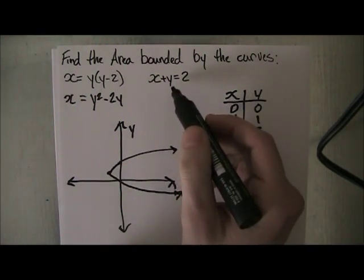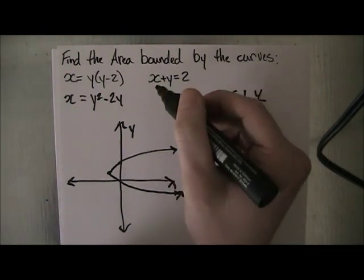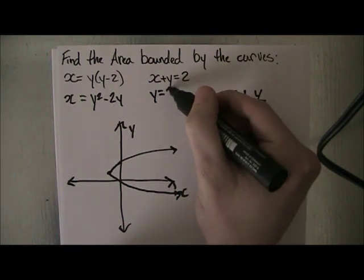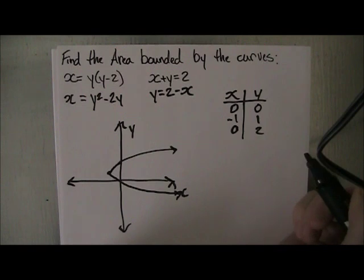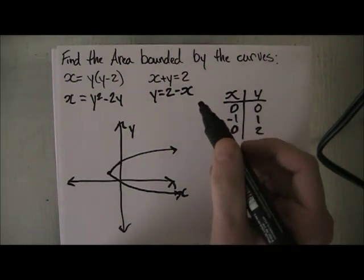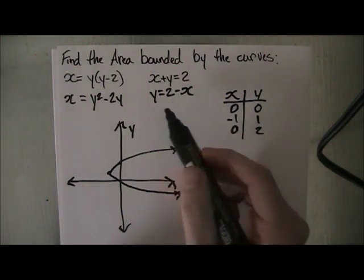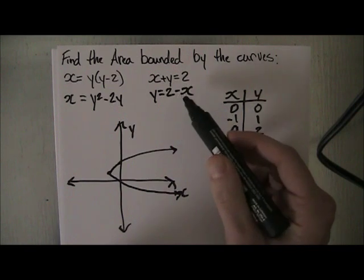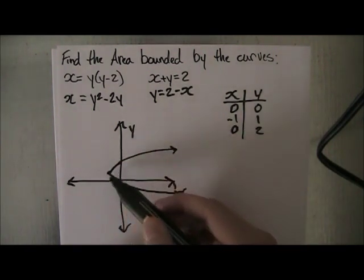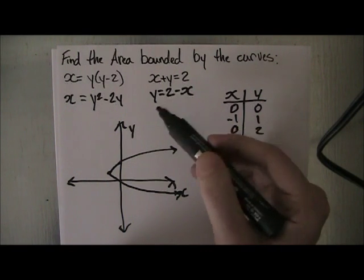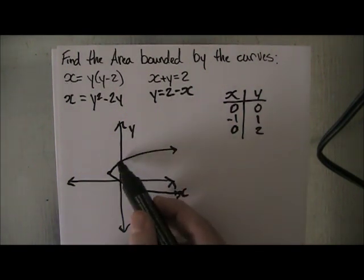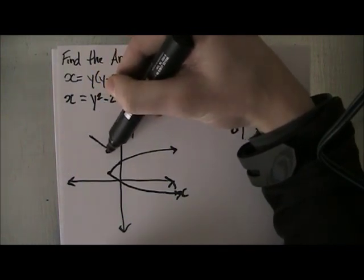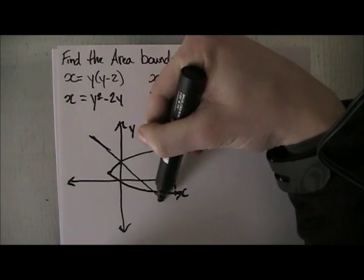Now we have to sketch out this other curve. I like to put it in terms of y equals something. So we're going to have y equals 2 minus x. Because x is to the power of 1, we know this is a line. When it's minus x, it goes diagonally the other way, but because there's a 2, we raise it up by 2. We know the point y equals 2, so it intercepts like this.